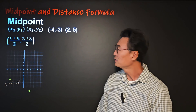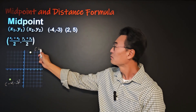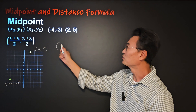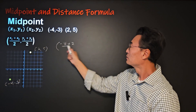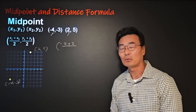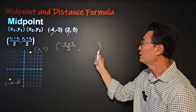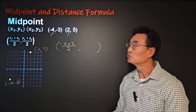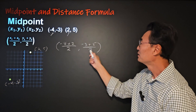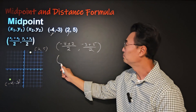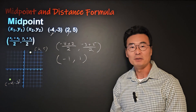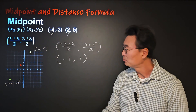First, negative 4 comma negative 3 right here, and then 2 comma 5 here. Then using the formula to find the midpoints, we're going to add the x1 and x2 — the two x's of the points — and divide by 2, then add the two y's, negative 3 and 5, and divide by 2 again.